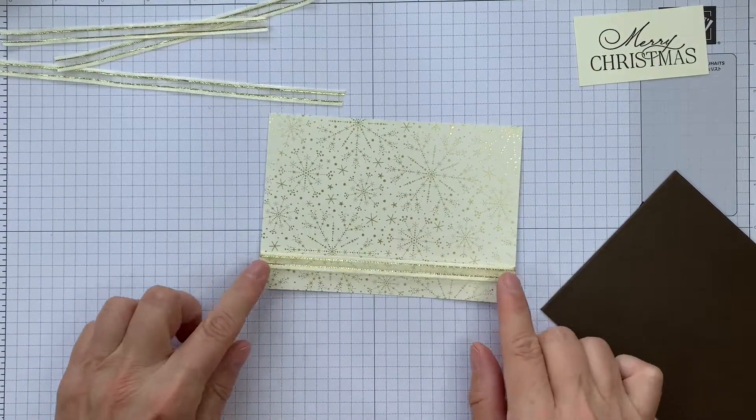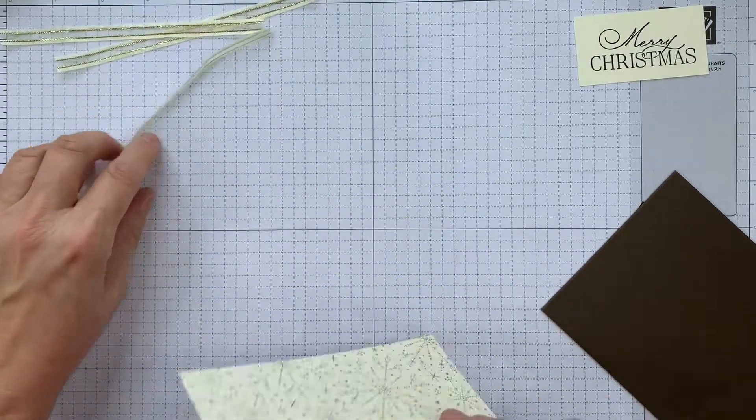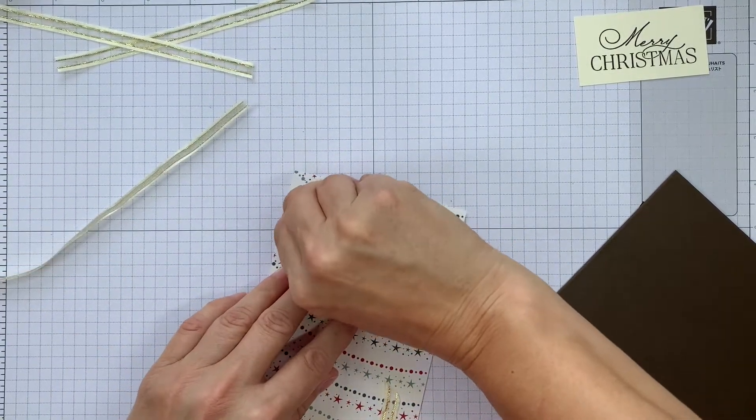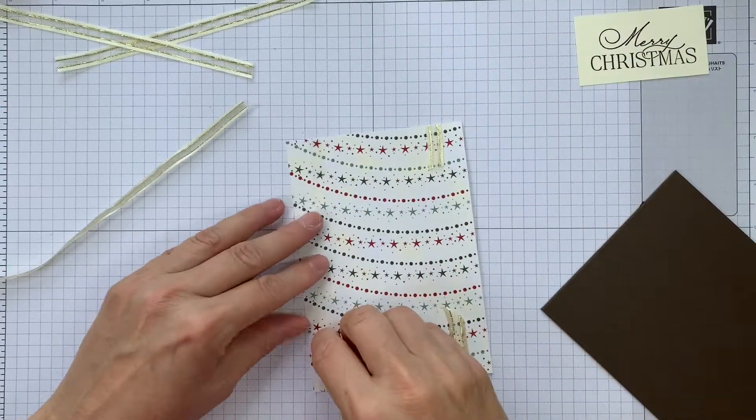So I'm laying it down and then fastening it like that so that it's fairly tight. It's pulling up just a tiny bit. But when we adhere that to the card, that will straighten out.